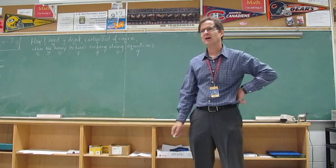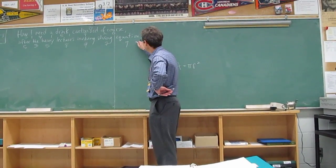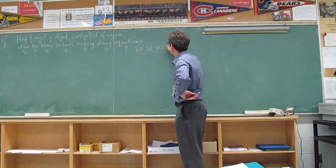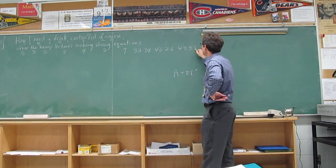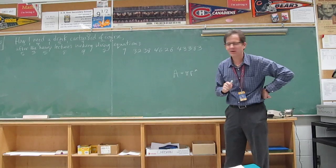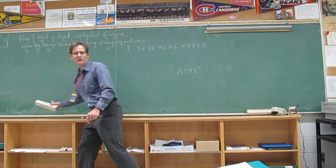So it goes three point one, four, one, five, nine, two, six, five, three, five, eight, nine, seven, nine, three, two, three, eight, four, six, two, six, four, three, three, eight, three. So far so good? Yep. Okay. By the way that's the end of the first row on the pi r squared button that they have.